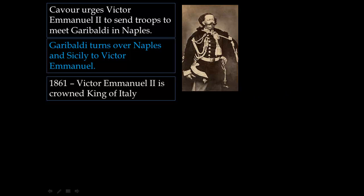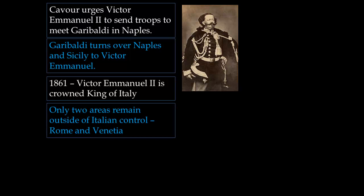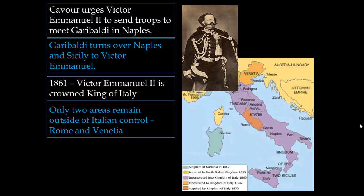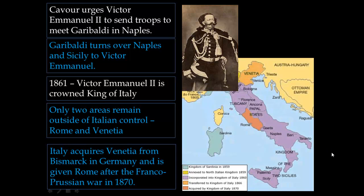However, two areas still remain outside Italian control: Rome and Venetia. After Cavour's death, Italy acquires Venetia from Bismarck in Germany, and is given Rome after the Franco-Prussian War in 1870. This means that for the first time since the fall of the Roman Empire, there is a unified Italy — achieved through numerous small wars, deals, and different revolutionaries working toward the same goal.